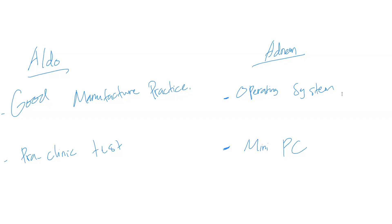Not every product from manufacturing will be a perfect finished product — there will be some flawed or reject products. How does a company respond to this in terms of management — do they recycle or dump it? When a company gets a reject product, they usually consider whether the rejected material is able to be recycled or not. If it can be recycled, they will recycle it.